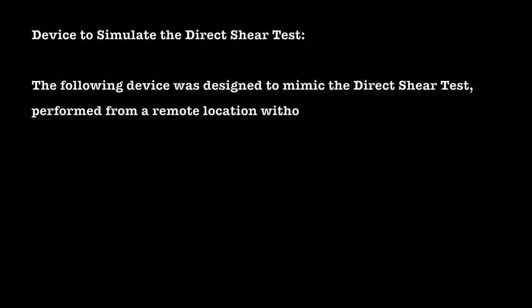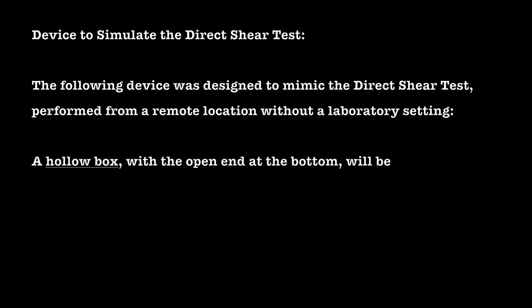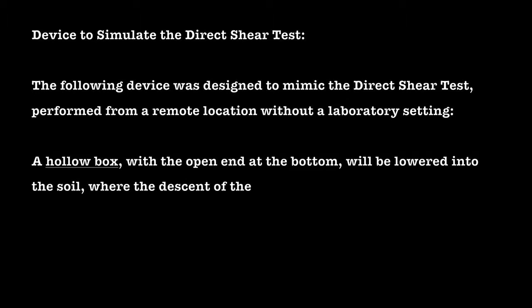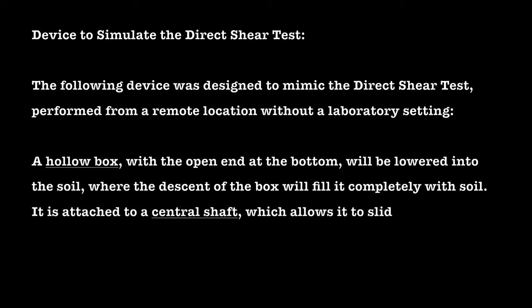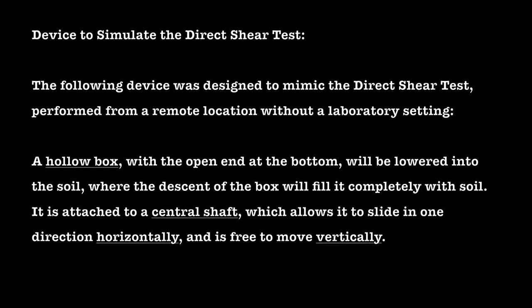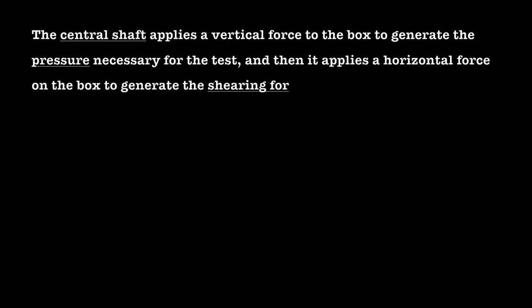The following device was designed to mimic the direct shear test, performed from a remote location without a laboratory setting. A hollow box with the open end at the bottom will be lowered into the soil, where the descent of the box will fill it completely with soil. It is attached to a central shaft, which allows it to slide in one direction horizontally and is free to move vertically. The central shaft applies a vertical force to the box to generate the pressure necessary for the test, and then it applies a horizontal force on the box to generate the shearing force on the soil.